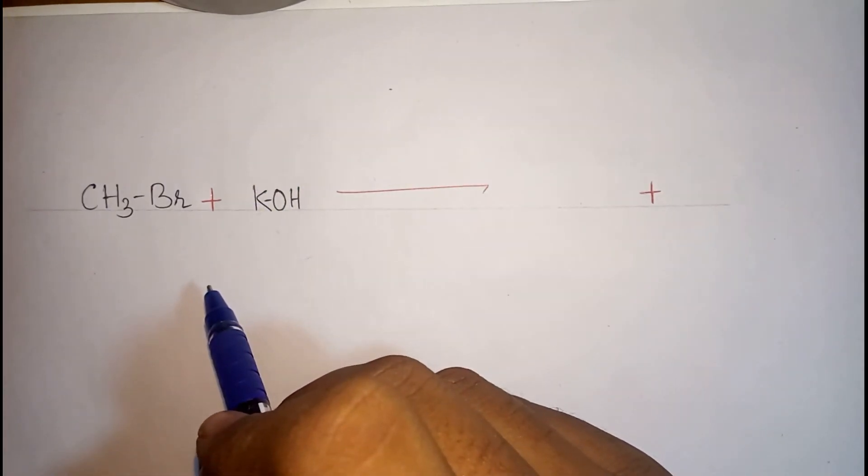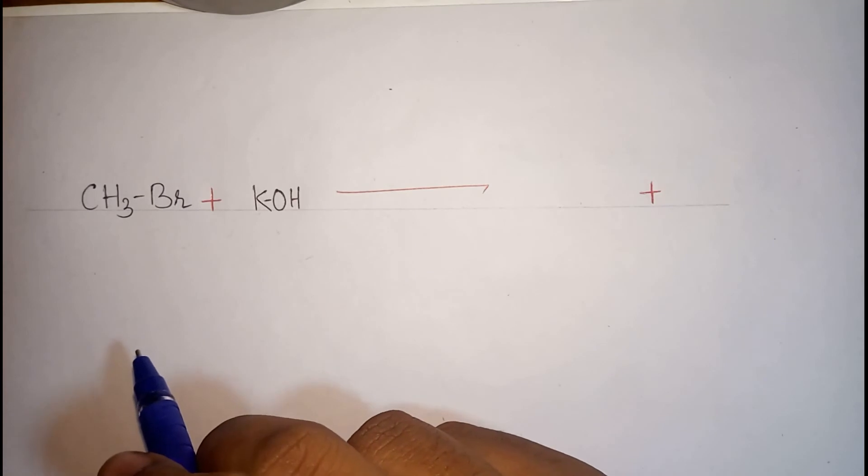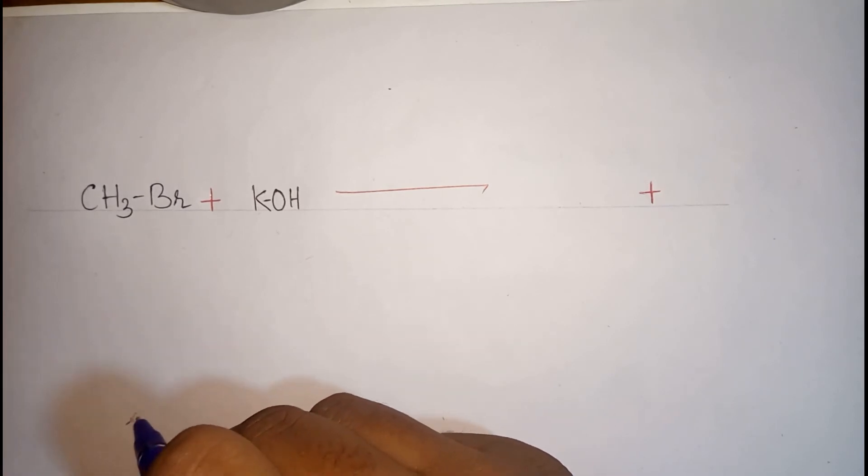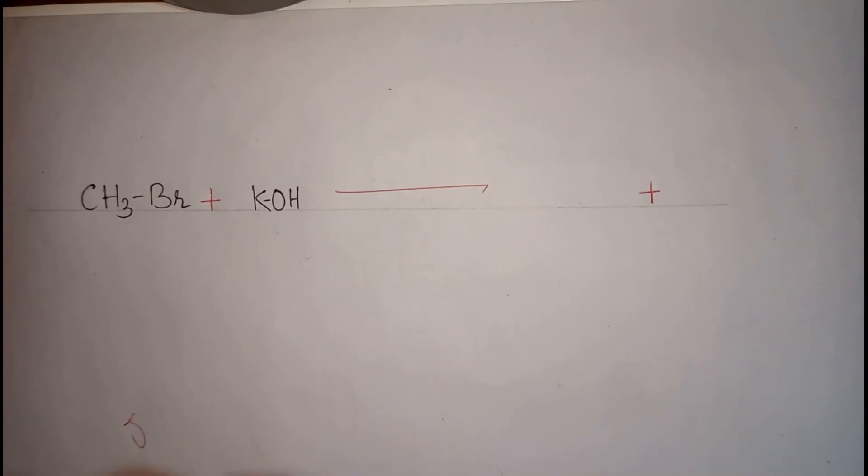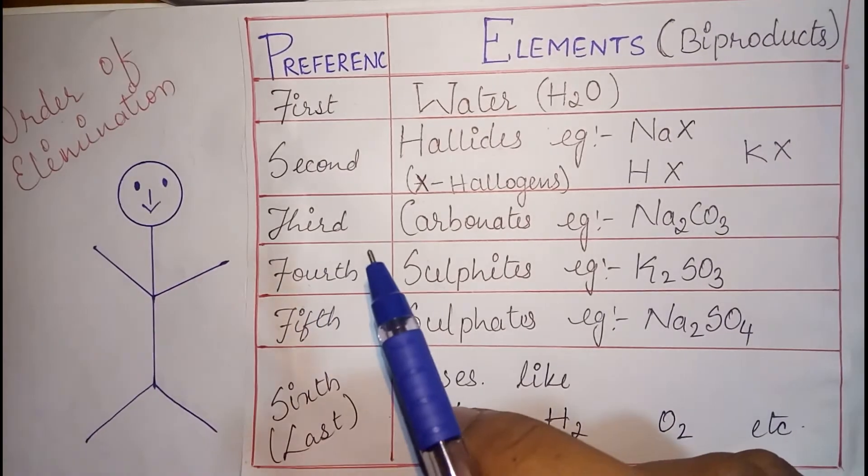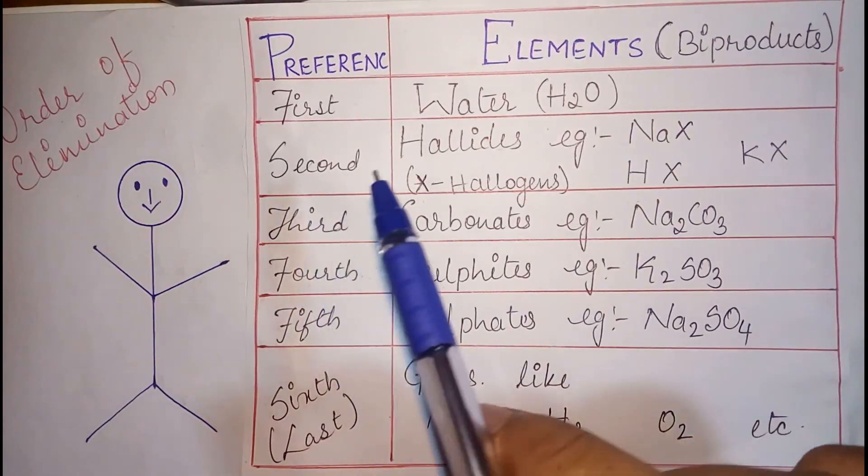Only one OH molecule we can find at the terminal. We require one more hydrogen molecule to eliminate the bi-product as water. But we can't find any hydrogen molecule at the terminal. So water cannot be eliminated. Now look into the table again. Second preference is given to halides.